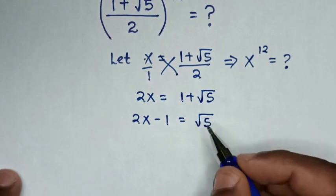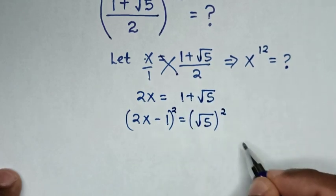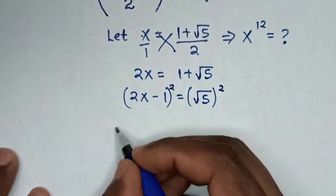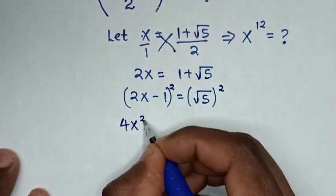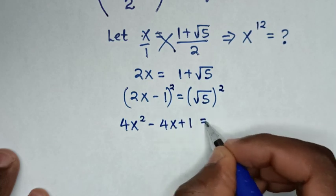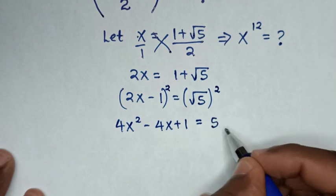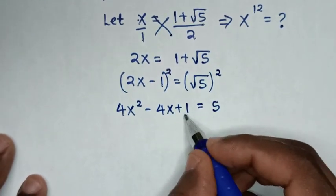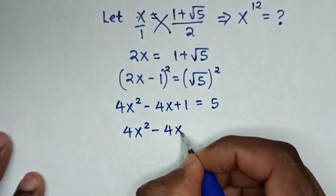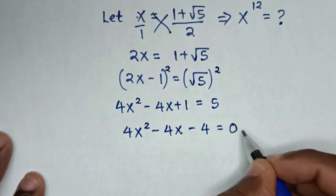Then to remove this square root, we'll square both sides. The expanded form of (2x minus 1) squared is 4x squared minus 4x plus 1, equal to — the square root cancels with the square — so it will be 5. Then we take 5 to the left side, so it will be 4x squared minus 4x, then 1 minus 5, which is negative 4, is equal to 0.